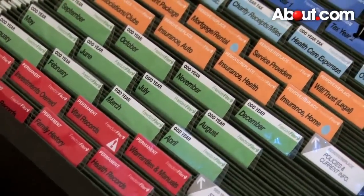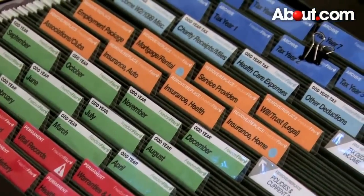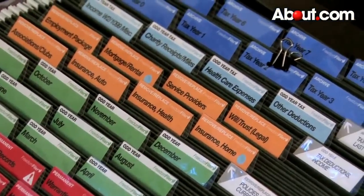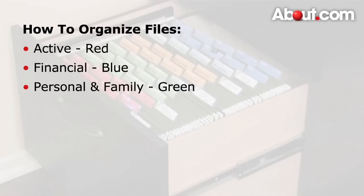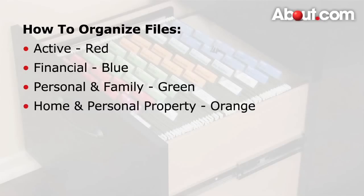There are many ways to categorize files, but what I think works best is to break things into five major category sections for easy identification. I recommend using different colors so that it's easy to differentiate between categories. For example: active files use red, financial files use blue, personal and family use green, home and personal property use orange, and legal and taxes use purple.